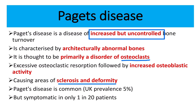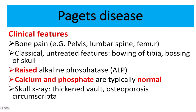Paget's disease is common in the UK with a prevalence rate of about 5%, but symptoms present in only 1 in 20 patients. The clinical features include bony pain — particularly in the pelvis, lumbar spine, and femur — as these bones have a very high turnover rate.